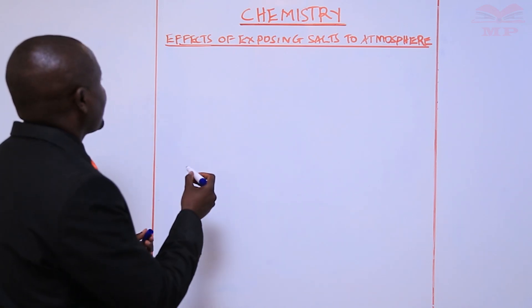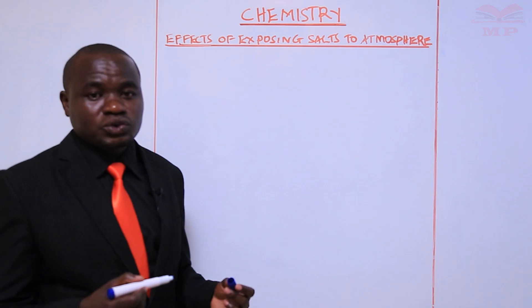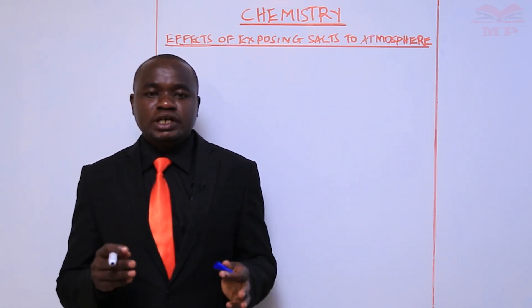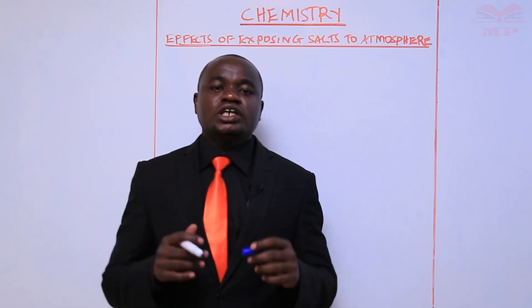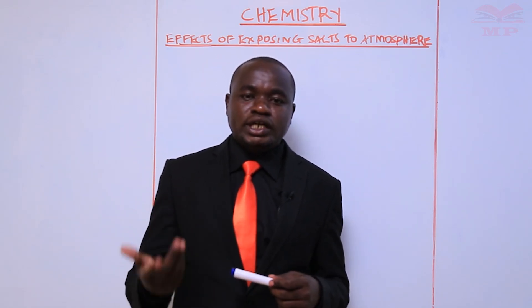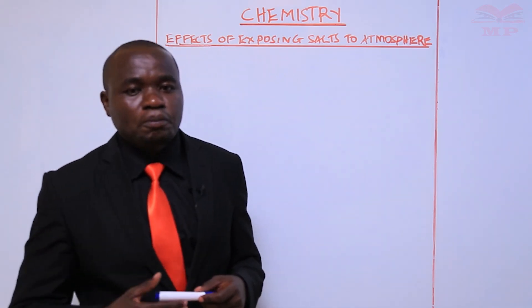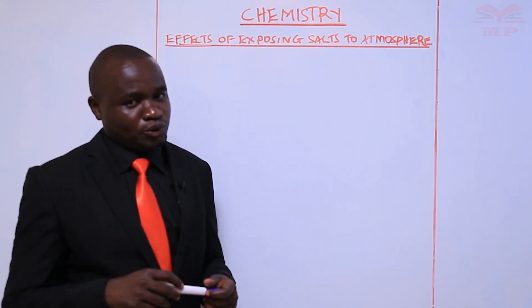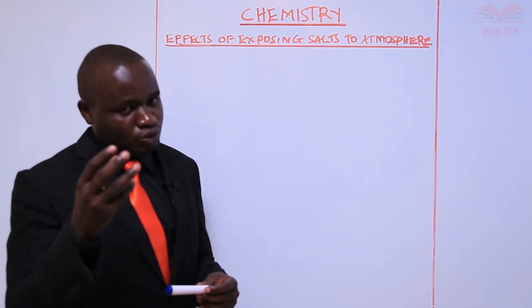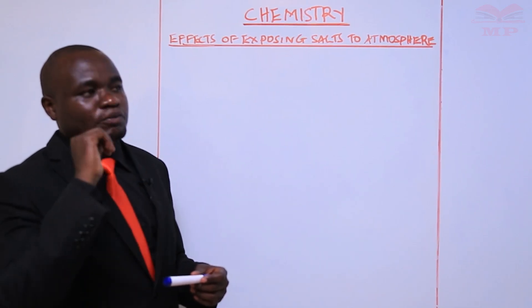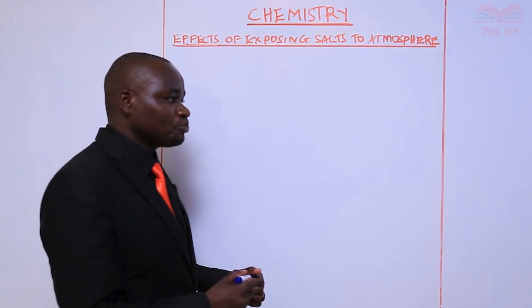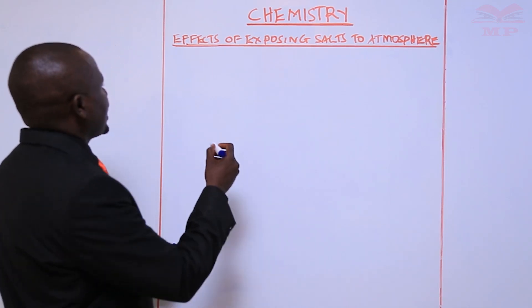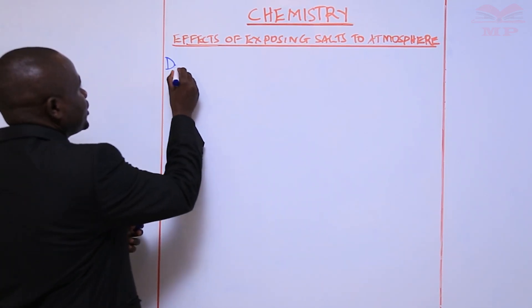We have some salts which, when they are exposed to the atmosphere, they absorb moisture from the air, and that will enable them to turn into a solution. Such type of salts, which when exposed to the atmosphere absorb moisture or water vapor from the atmosphere and turn into a solution, are called deliquescent salts.